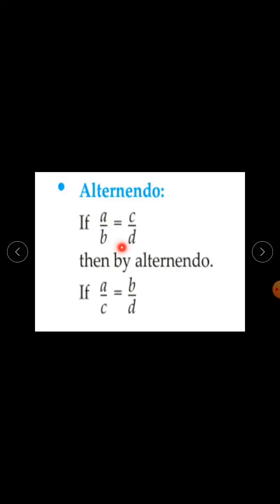The second property is alternendo. Again, if A upon B is equal to C upon D and two equal ratios are given, then by alternendo property, A upon C is equal to B upon D. This property is called alternendo.